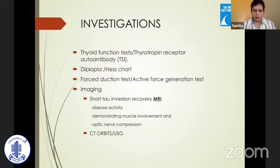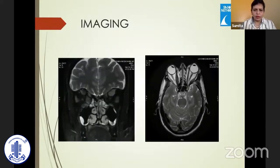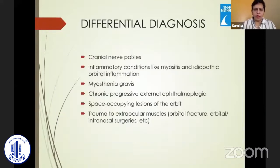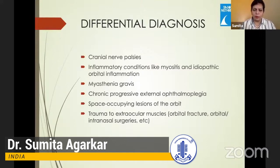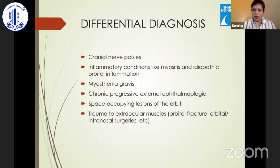CT scan or ultrasound can also be done, but they are less helpful. This is a typical MRI — T2-weighted image — showing a bulky muscle; you can see the inferior rectus is really enlarged, as well as the medial rectus. Differential diagnoses include myasthenia gravis, which can coexist with or mimic thyroid orbitopathy and needs to be ruled out. Silent orbitopathy can sometimes mimic cranial nerve palsies, and other inflammatory conditions like myositis, idiopathic orbital inflammation, can also mimic thyroid eye disease.